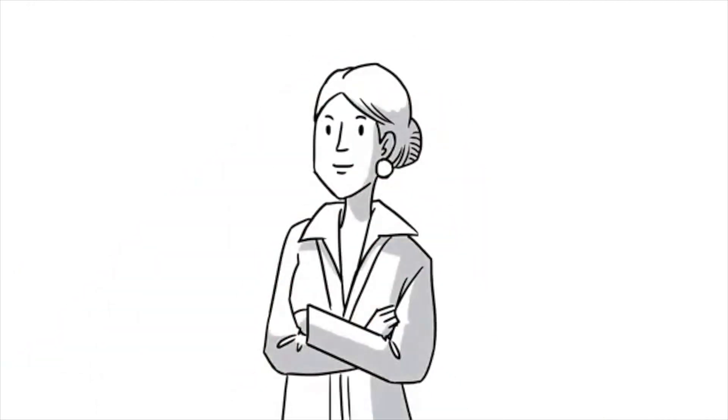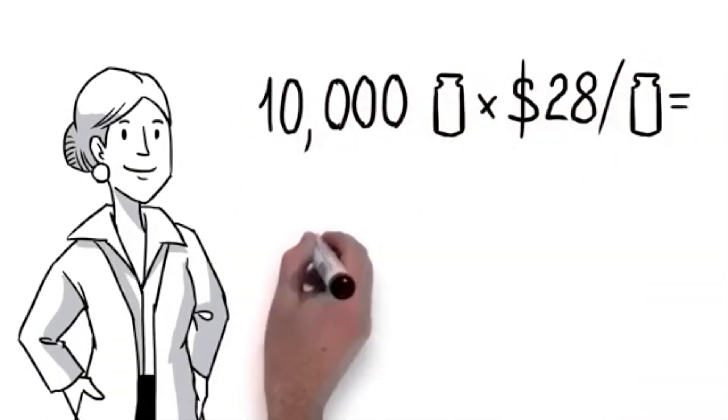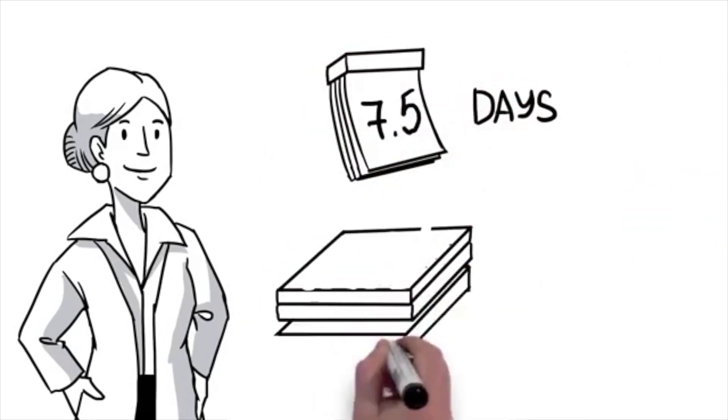Joe, your suggestion makes perfect sense, but Kathy, the business manager, wants to quantify it. We run 10,000 vials per batch with a value of $28 per vial, or $280,000 per run. Each cycle takes seven and a half days.